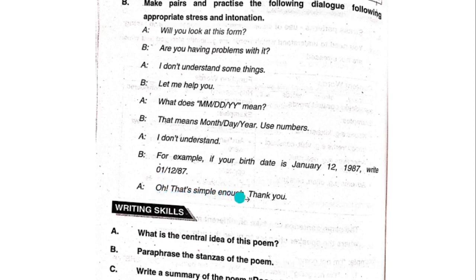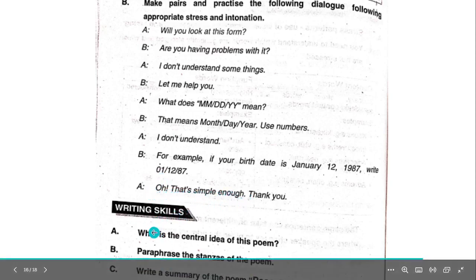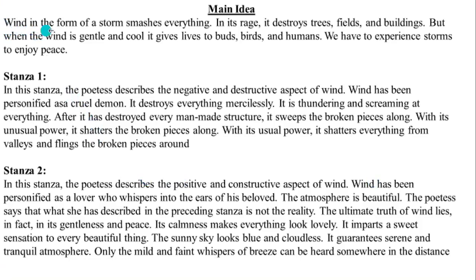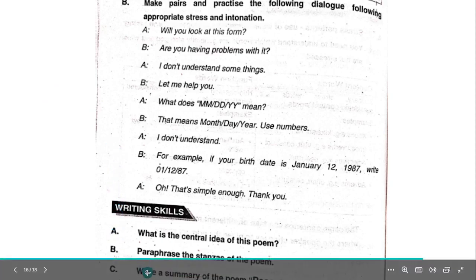Writing skills. What is the central idea of this poem? Main idea: When in the form of a storm, wind smashes everything in its rage — it destroys trees, fields, and buildings. But when the wind is gentle and cool, it gives life to birds and humans. We have to experience storms to enjoy peace.